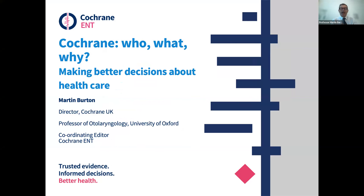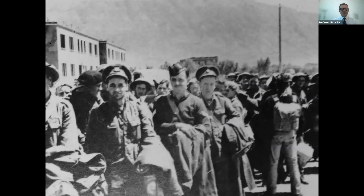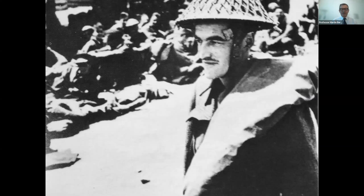I'm going to say a little bit about how I got to that point. But before I do that, this is where we're going to start. The story really starts in Salonika in Greece in June 1941, when a young Scottish doctor who was a medical officer in the British Army was captured in Crete and taken as a prisoner of war to a transit camp in Salonika. And this man was Archie Cochrane.